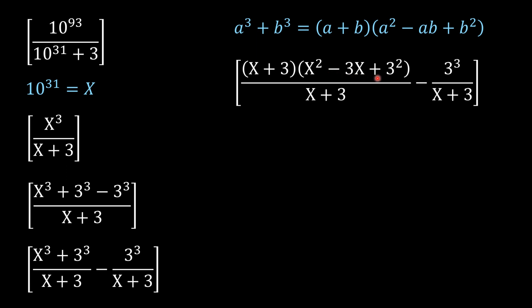So (X + 3)(X² - 3X + 3²), denominator remains same. The second part remains same. Now this X is 10 raised to the power 31—it's a big number plus 3, so it's still a positive number, it's not zero.